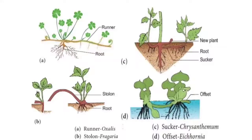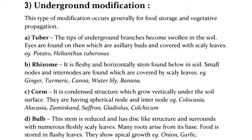Underground modifications — this type of modification occurs generally for food storage and vegetative propagation. Tuber — the tips of underground branches become swollen in the soil; eyes are found on them which are axillary buds covered with scaly leaves, e.g., Potato, Helianthus tuberosus. Rhizome — it is a fleshy, horizontally growing stem found below the soil; small nodes and internodes are covered by scaly leaves, e.g., Ginger, Turmeric, Canna, Water lily, Banana. Corm — it is a condensed structure which grows vertically under the soil surface, having spherical nodes and internodes, e.g., Colocasia, Alocasia, Zamioculcas, Saffron, Gladiolus, Colchicum. Bulb — this stem is reduced and has a disc-like structure surrounded by numerous fleshy scaly leaves; many roots arise from its base; food is stored in fleshy leaves; shows apical growth, e.g., Onion, Garlic.